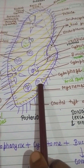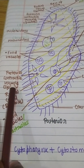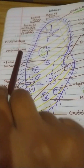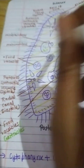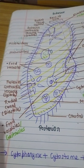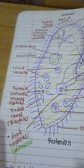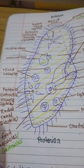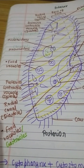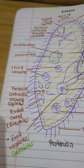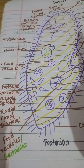Excretion mainly occurs from the posterior contractile vacuole, which is non-stationary, and the anterior contractile vacuole, which is stationary. Osmoregulation also occurs in the contractile vacuoles.